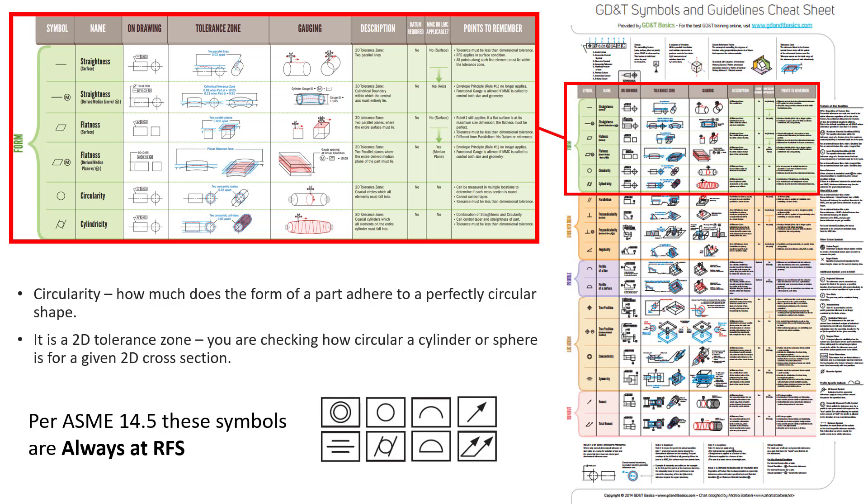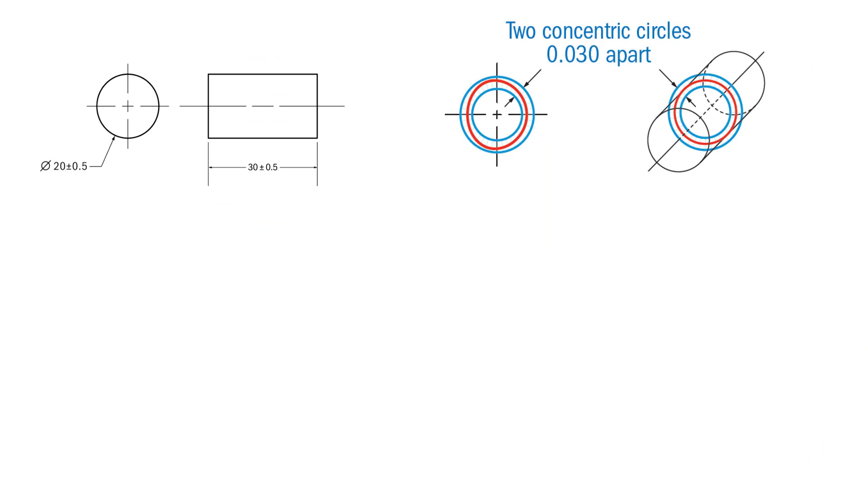It's controlling circularity because circularity is the 2D control. So for circularity, it's a 2D cross section. So across a cylindrical feature, it's any given 2D cross section. So in each one of those cross sections are independent from the previous or the next. So when you're taking measurements for circularity, you are taking measurements on the 2D cross section and then moving over, taking another one. And the previous, let's say that whatever your method is, the previous one cannot be compared to that next one. They are individual 2D checks.